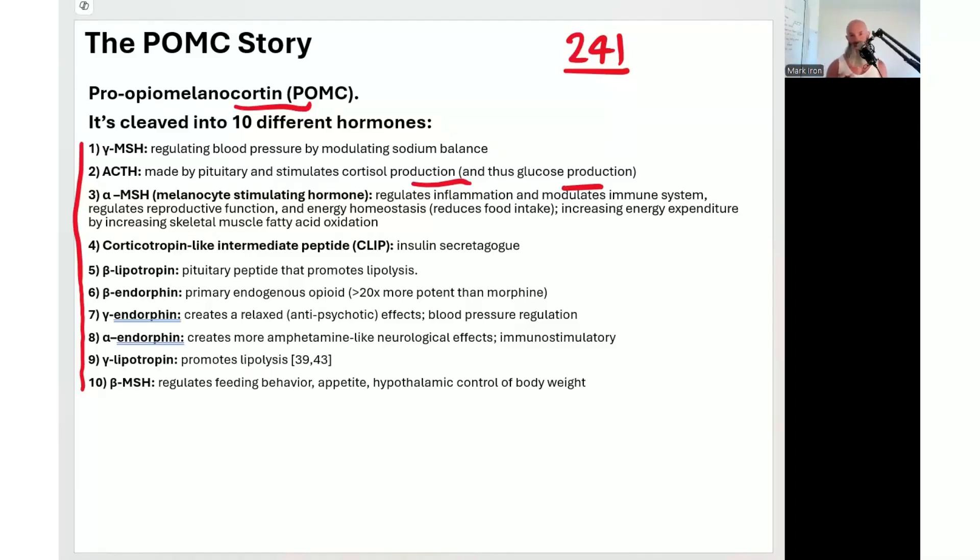It's modulating both branches of the immune system. It also helps trigger sex hormone production and libido, increases basal metabolic rate and lowers appetite. Then we've also got the secretagogue for insulin here, CLIP, keeping insulin at healthy levels, really good for fat loss. It's also triggering two lipoproteins for lipolysis, fat loss, here and here. Then these feel-good hormones like endorphins, endogenous opioids. And the final one here, beta MSH, regulates feeding behavior, appetite at the hypothalamic level for body weight.